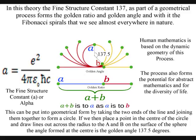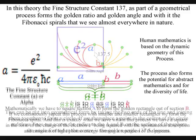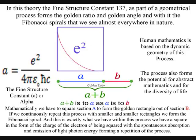Mathematically, we have to square section a to form the golden rectangle out of section b. If we continuously repeat this process with smaller and smaller rectangles, we form the Fibonacci spiral.